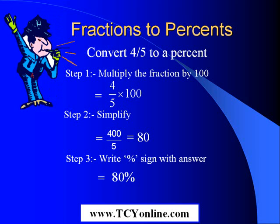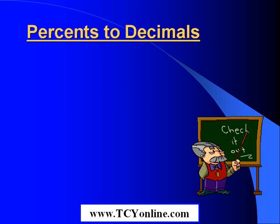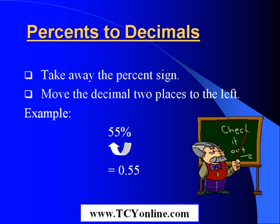Therefore, our answer becomes eighty percent. Let us now see how to convert percents to decimals. A fairly simplified approach would be followed. The first step would be to take away the percent sign. Secondly, we would move the decimal two places to the left. For example, we need to convert fifty-five percent to decimals. So we would remove the percent sign and move the decimal two places to the left. Our answer is zero point five five.